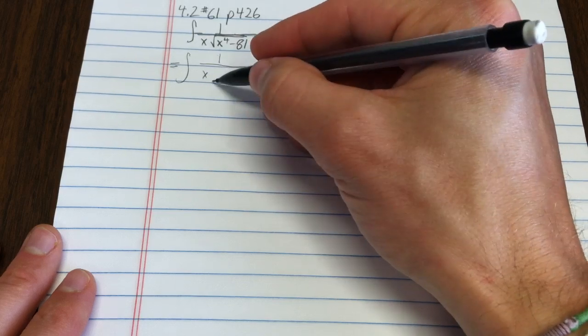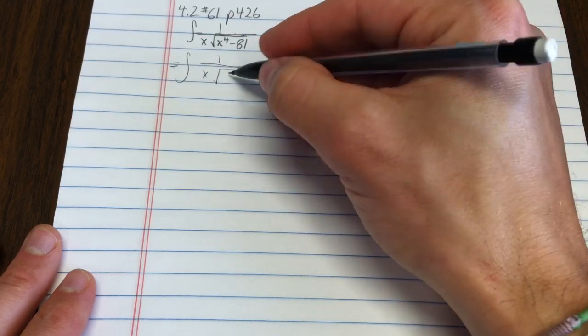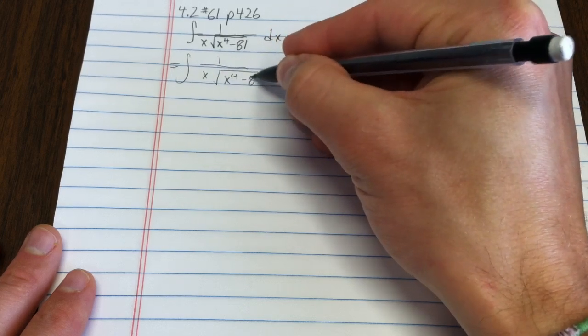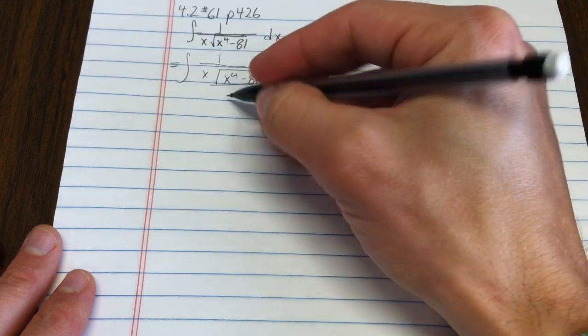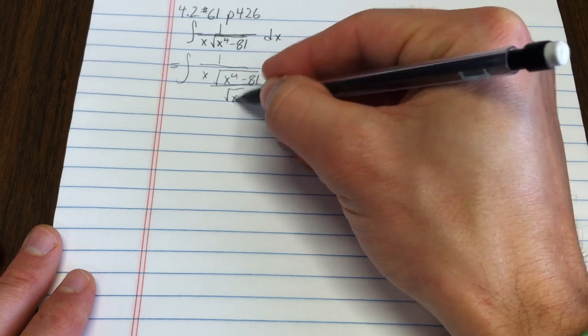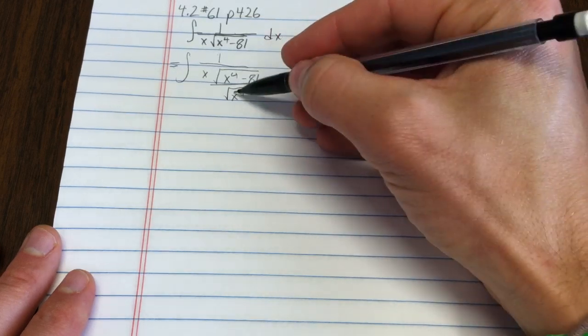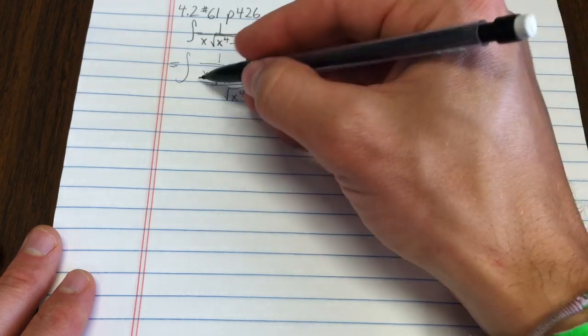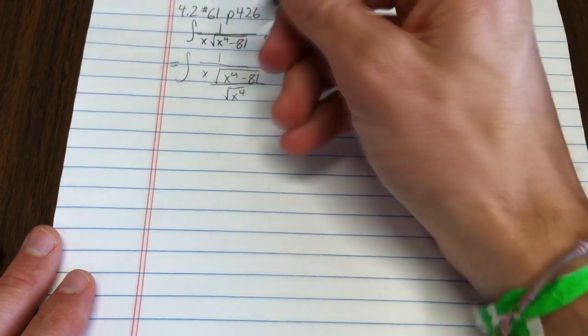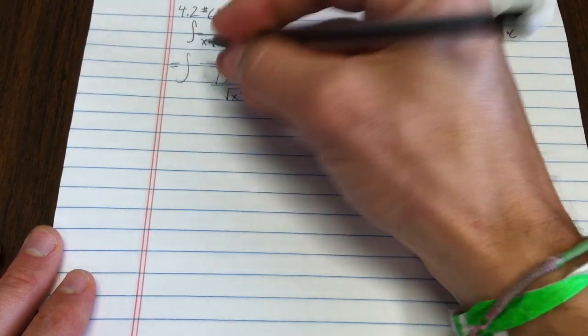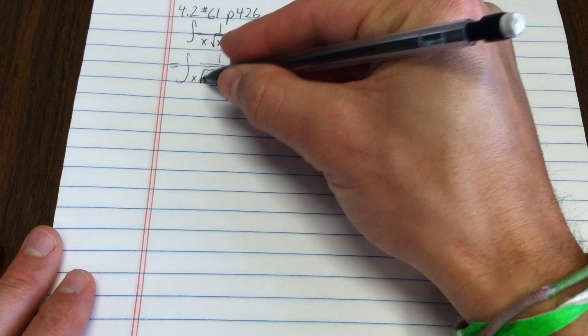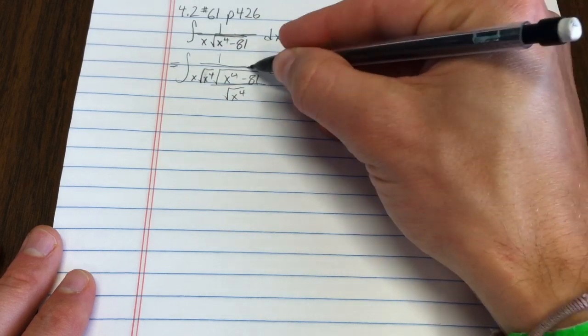Let's make this x to the fourth minus 81 over the square root of x to the fourth. Then when we combine those square roots, that'll become a 1. Now I can't just divide by x to the fourth. I also have to multiply times x to the fourth. Let me put that in right here onto the square root. But we'll leave that separate. We'll actually work out what that is.